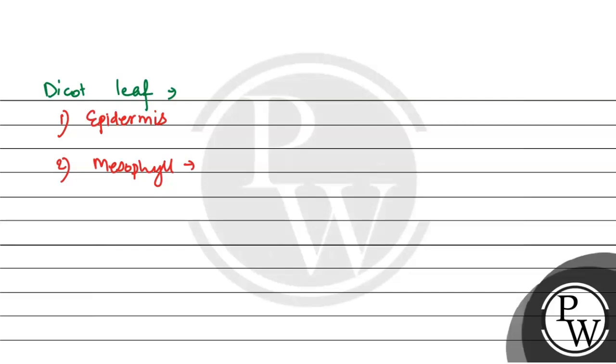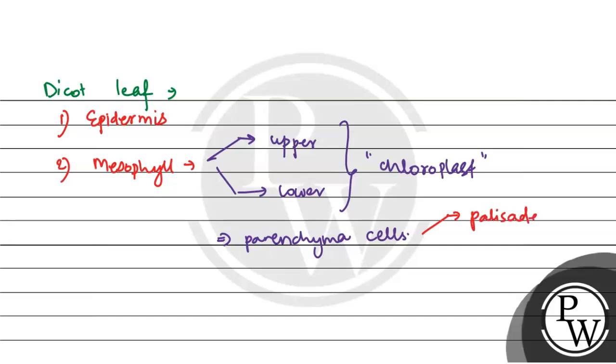After epidermis is mesophyll. The mesophyll cells are basically present in the upper and lower epidermis. They also contain chloroplast for photosynthesis. They are made of parenchyma cells, and two types of parenchyma are found here. First is the palisade parenchyma, and second is the spongy parenchyma.